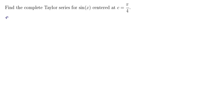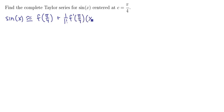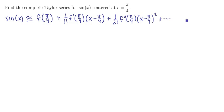The Taylor series for sine of x centered at π/4. We're going to have sine of x given by the Taylor series of f evaluated at π/4, plus 1 over 1 factorial times f prime evaluated at π/4 times x minus π/4, plus 1 over 2 factorial times f double prime at π/4 times x minus π/4 squared. We'll keep doing this until we can find a pattern in these coefficients.